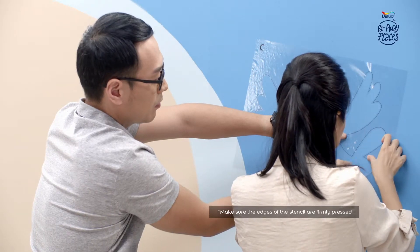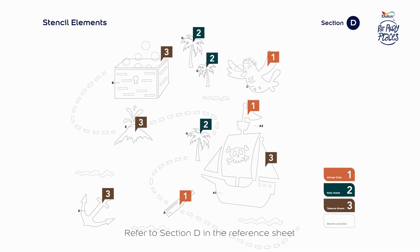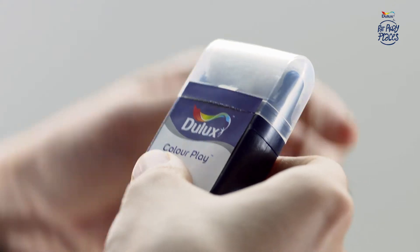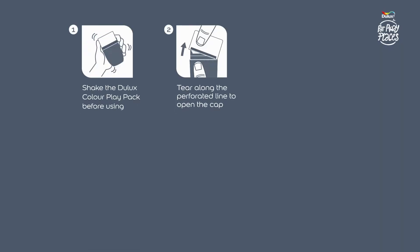Step 3 is about coloring the stencils. Use section D of the reference sheet for this. In this example, the Pirate Ship Body Stencil Code is A1 and the corresponding color is Tobacco Brown, Code 3. Now open the Dulux Color Play Pack carefully. Refer to these tips for using these packs.